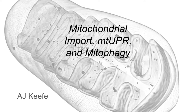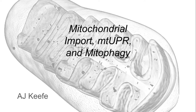In this lecture I'll be explaining the mitochondrial protein import pathway and then I will transition into talking about the mitochondrial unfolded protein response or MT-UPR, which is actually very intricately tied to mitochondrial import. I'll then finish by discussing the process of mitophagy, which is also tied in with these other processes. Hopefully by the end of the lecture you're going to have a good understanding of mitochondrial signaling as it relates to mitochondrial import, the MT-UPR, and mitophagy.